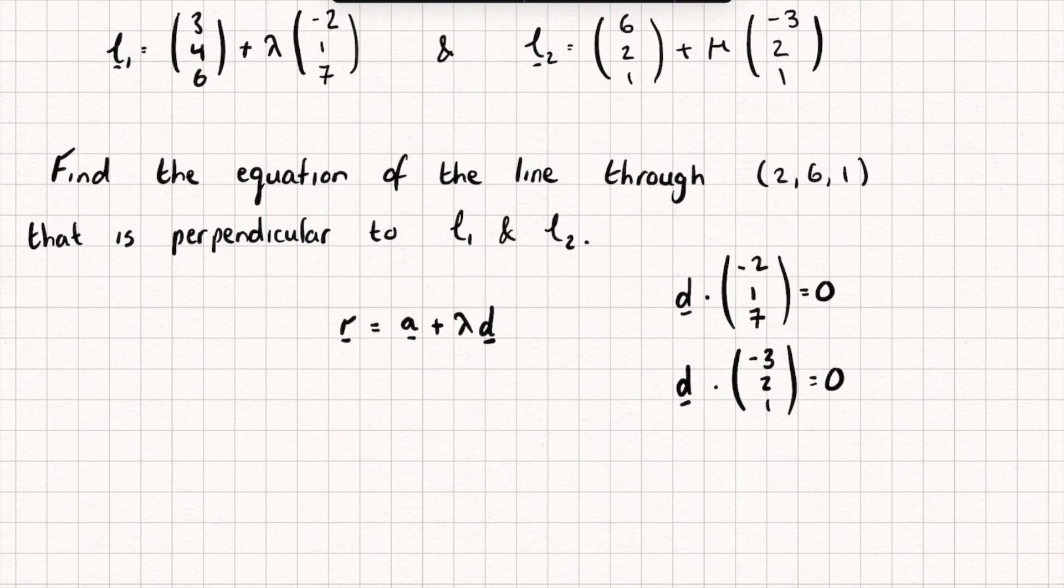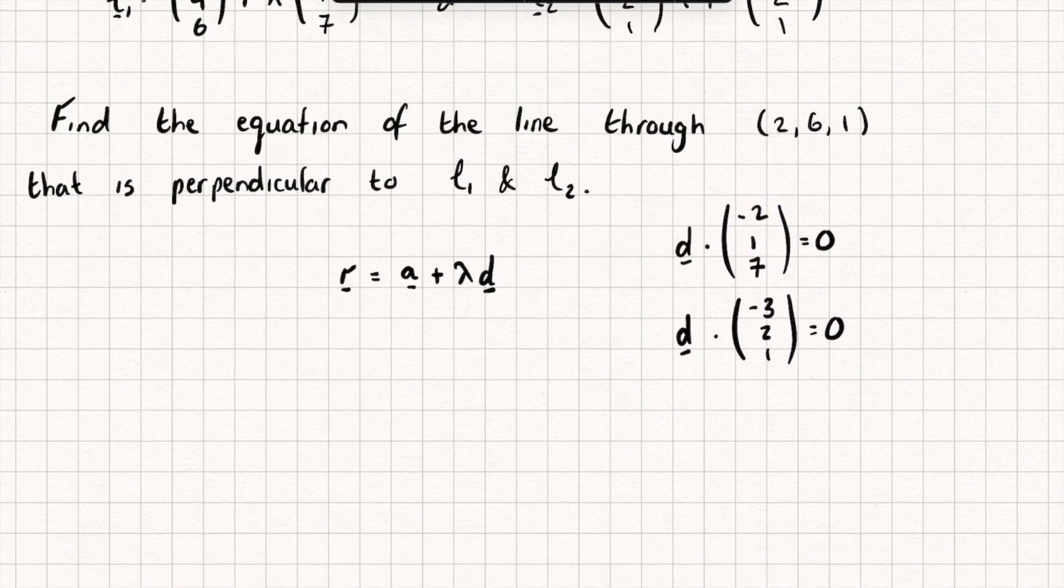And so to find this vector which is perpendicular to both the vector (-2,1,7) and (-3,2,1), I'm going to calculate the cross product of those two vectors. So let's find that. I'm going to take (-2,1,7) and cross it with the vector (-3,2,1).